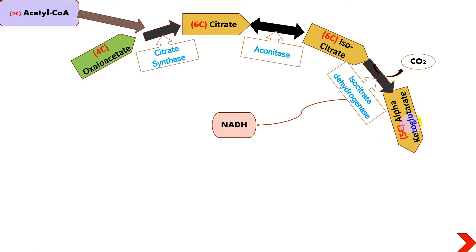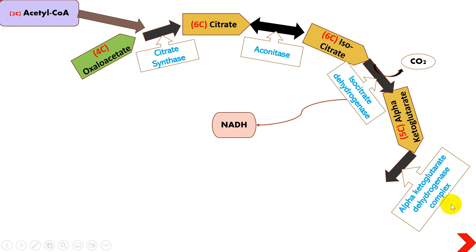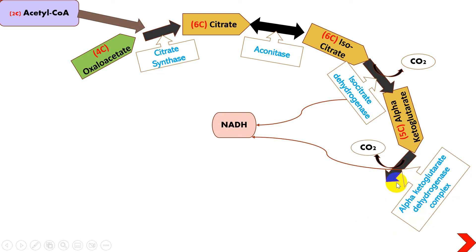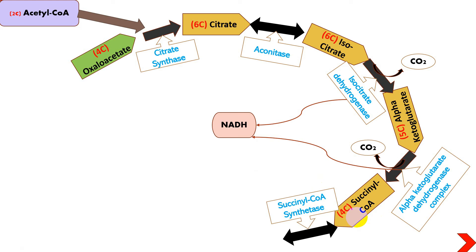Alpha-ketoglutarate is further acted upon by the alpha-ketoglutarate dehydrogenase complex, an important enzyme similar to the pyruvate dehydrogenase enzyme discussed in the previous lecture. This reaction also releases another NADH molecule along with the removal of another carbon dioxide molecule, resulting in the formation of succinyl-CoA, which is now a four-carbon molecule.